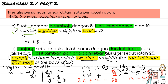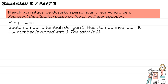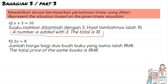For part 3, we need to represent a situation based on a given linear equation. For the first equation, x + 3 = 10, a suitable situation could be: a number is added with 3, and the total is 10. For the second equation, 2y = 8, a suitable situation could be: the total price of 2 same books is RM8.